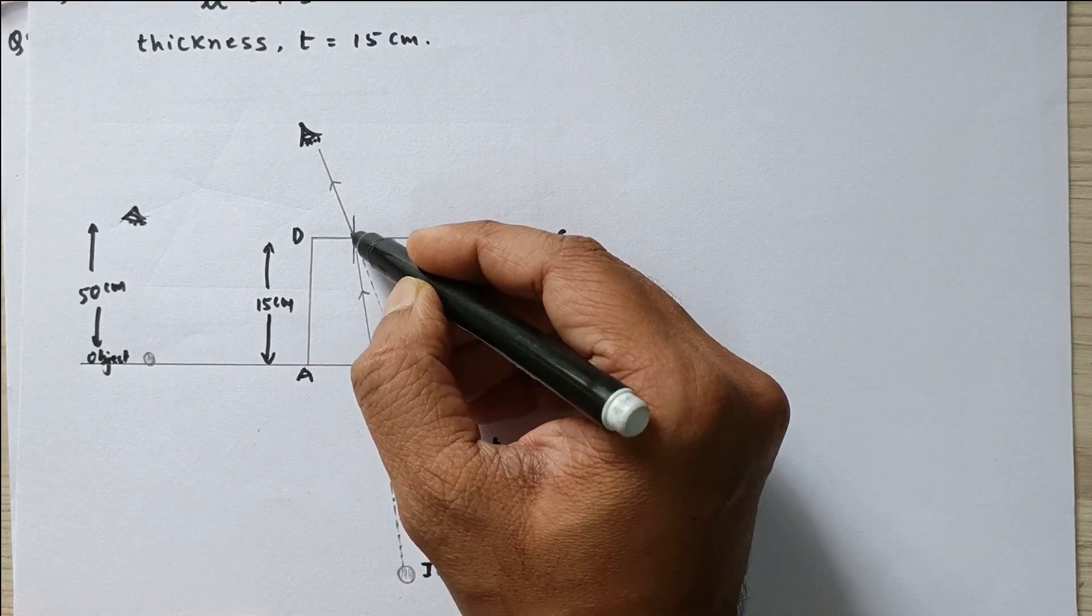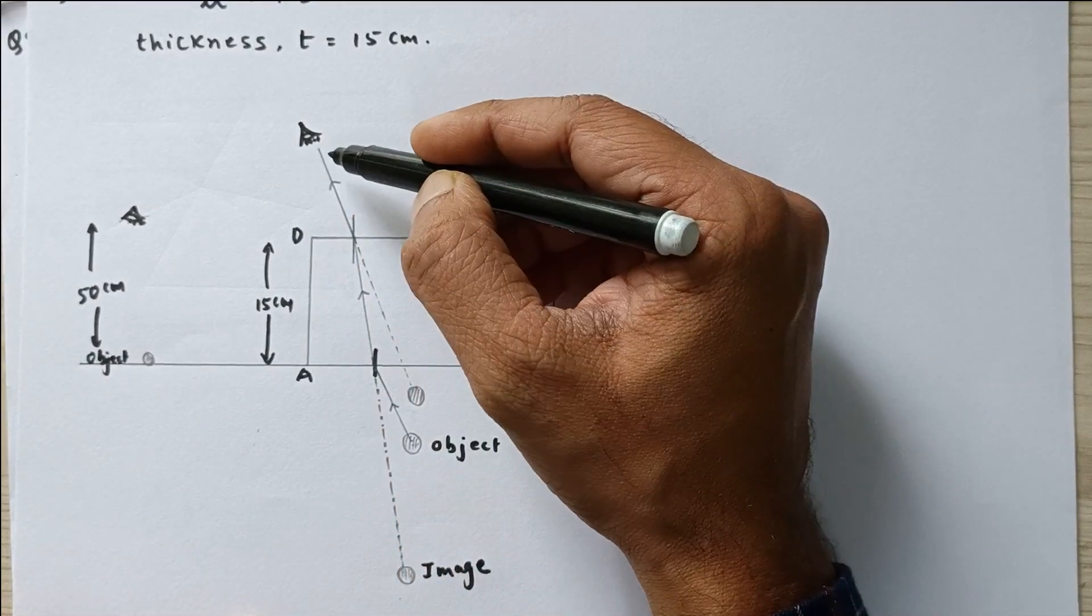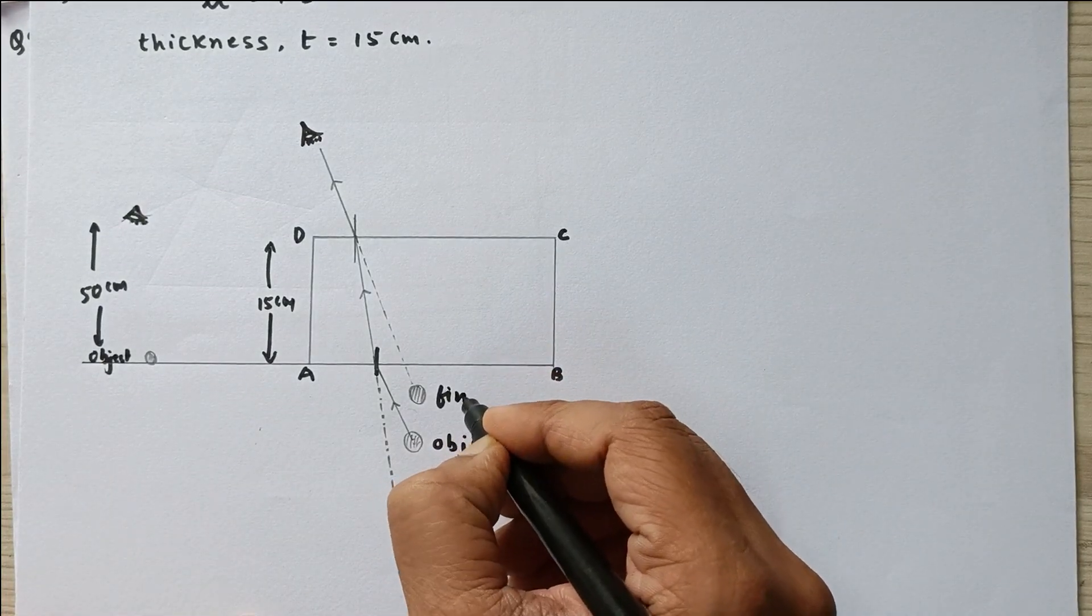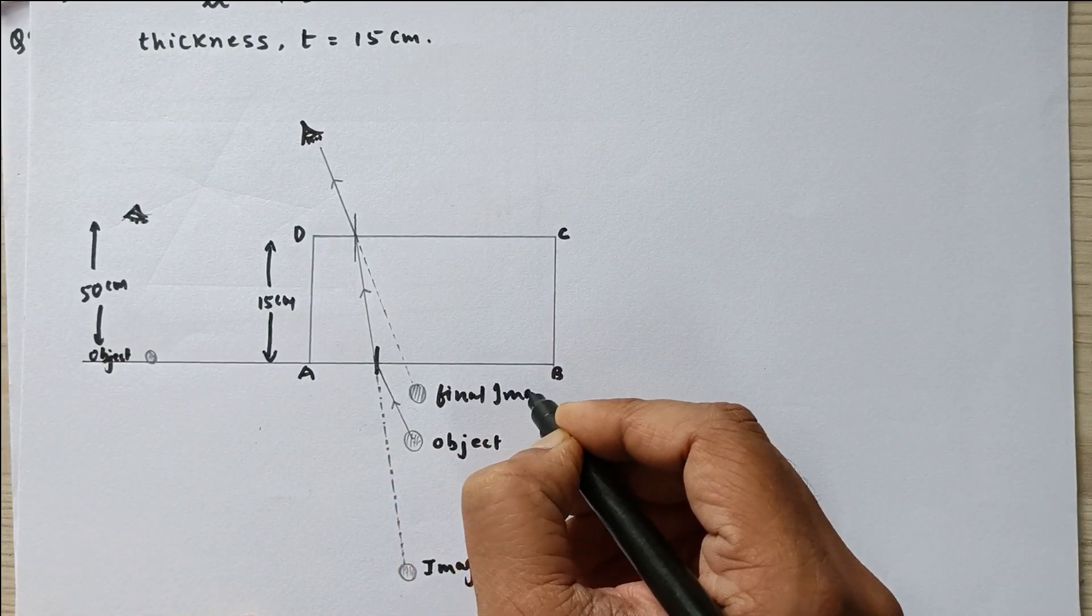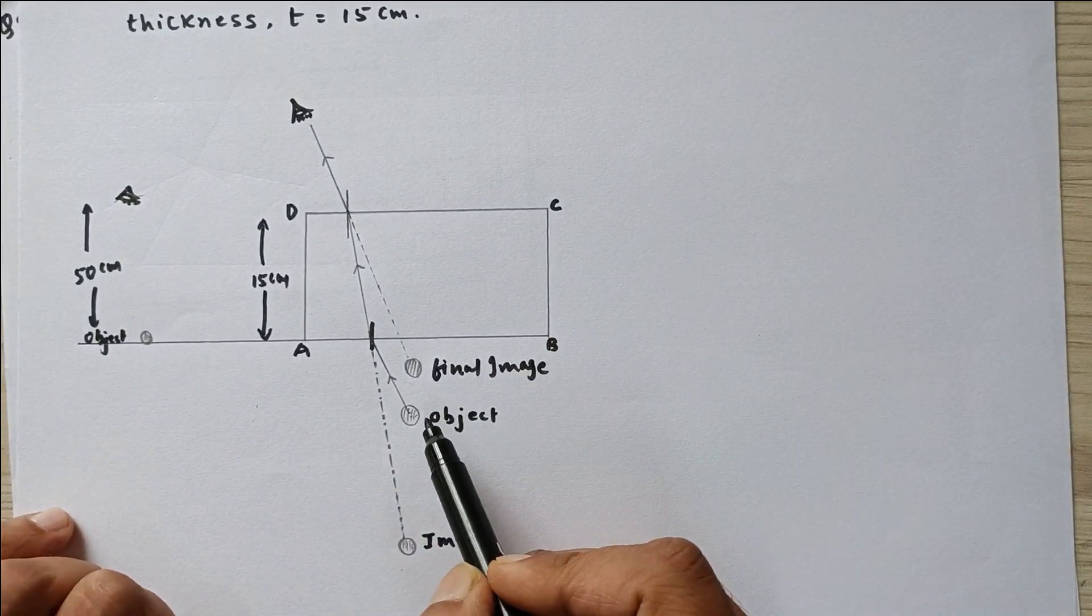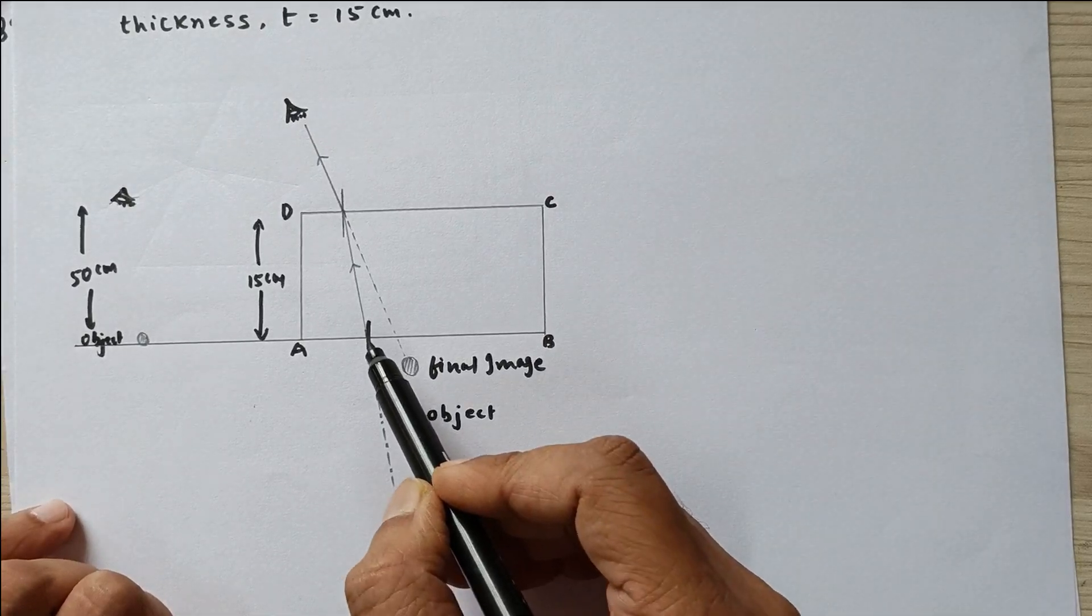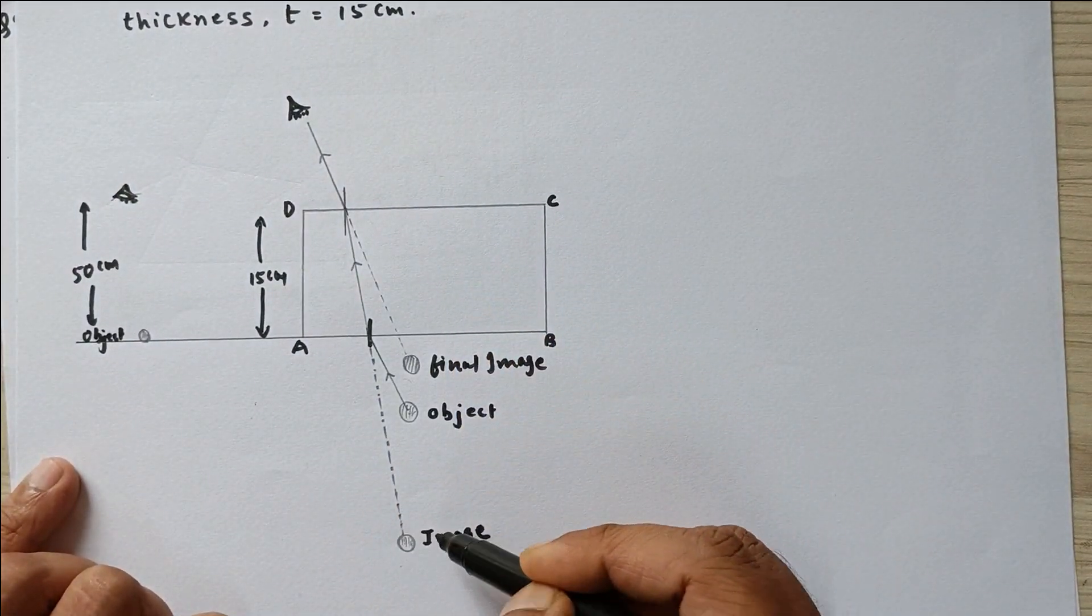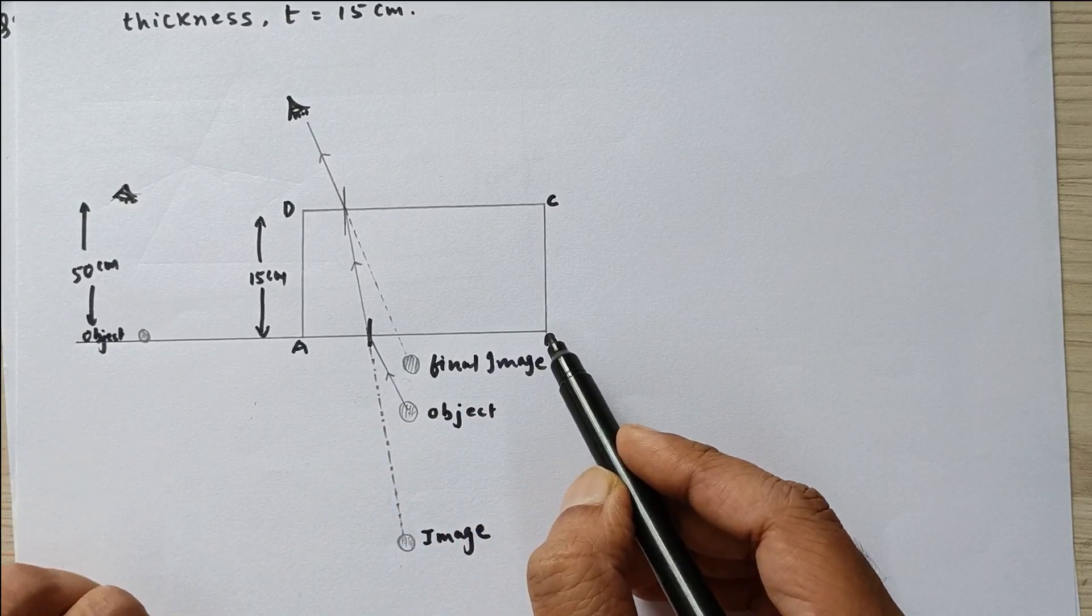And finally this ray would bend away from the normal, second time refraction, and when you sketch it backwards this is the final image. Please understand this once again: for surface AB this is the object, and then due to the refraction this ray appears to be coming from here. So this is the image for this surface.